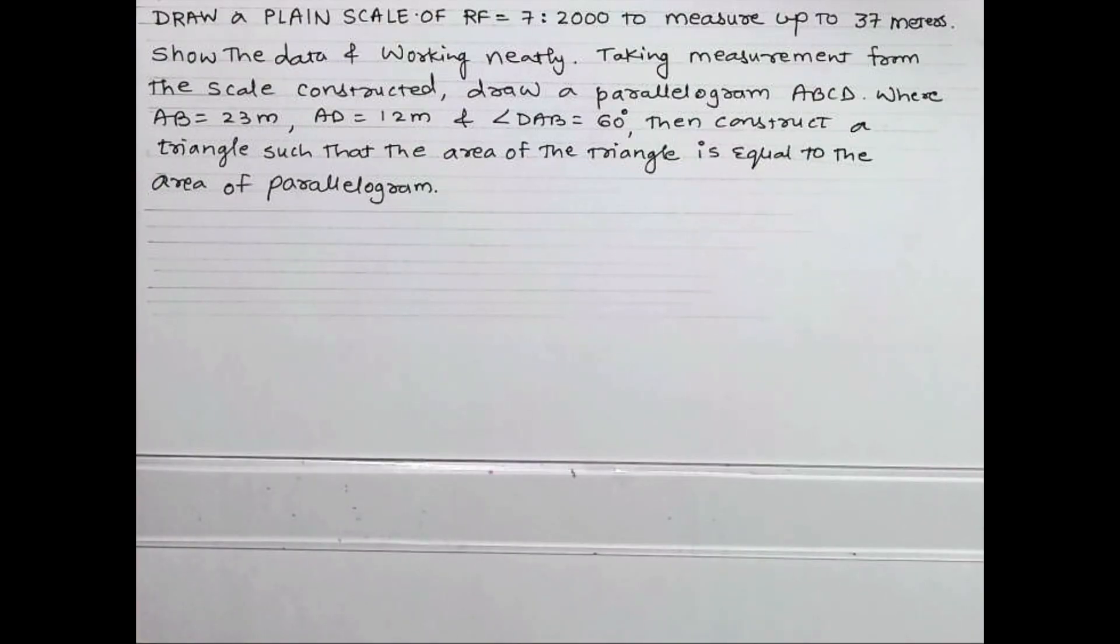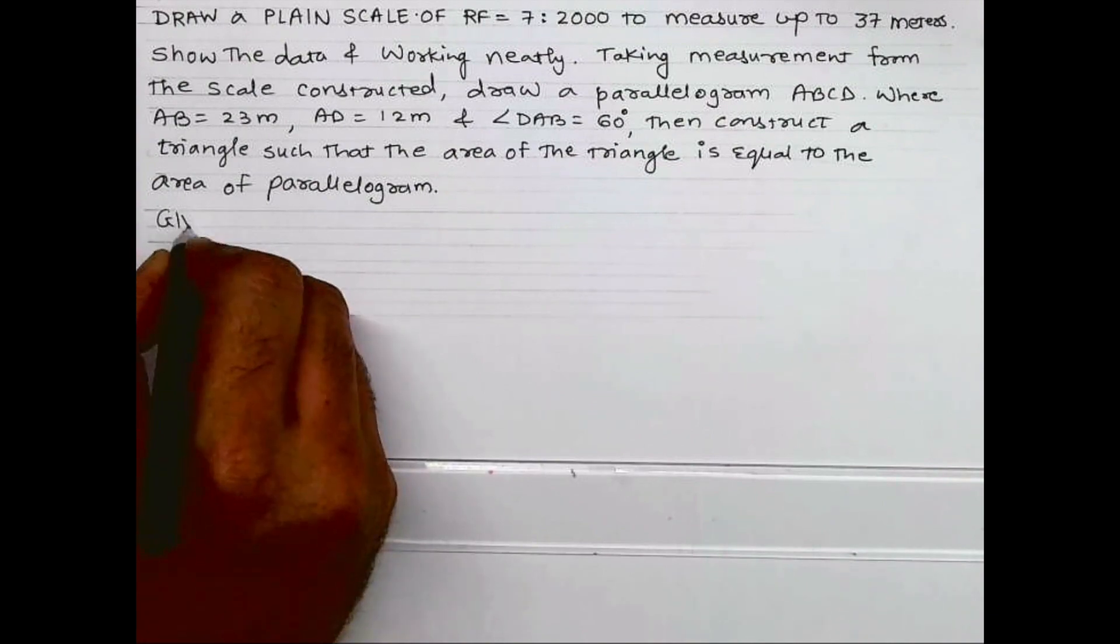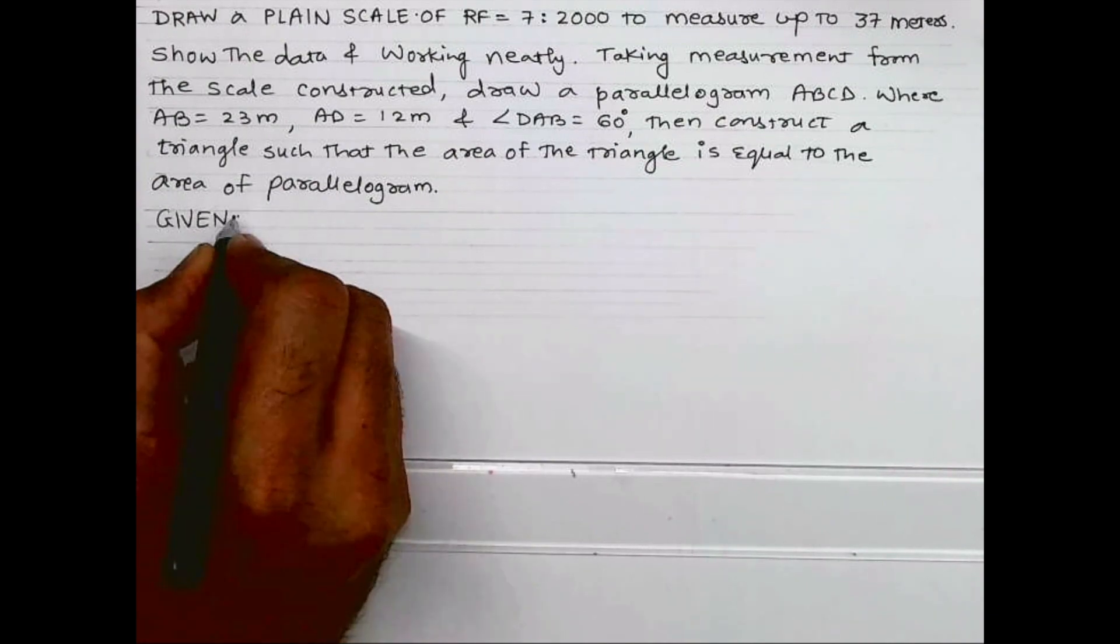Welcome to technical drawing. Today we'll see how to draw a plane scale of RF equals 7 upon 2000 to read up to 37 meters. Show the data and working neatly. Taking measurements from the scale, construct a parallelogram ABCD where AB is 23 meter, AD is 12 meter, and angle DAB is equal to 60 degrees. Then construct a triangle such that the area of the triangle is equal to the area of the parallelogram.